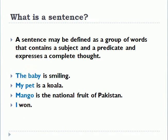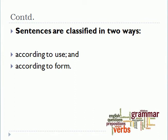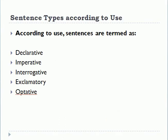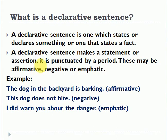Sentences are classified in two ways: according to use, and according to form. Today we discuss the classification according to use. According to use, sentences are termed as: declarative, imperative, interrogative, exclamatory, and optative — five basic types of sentences.